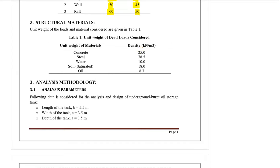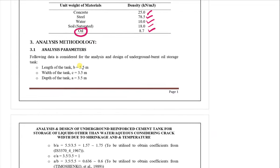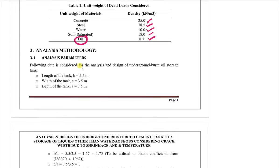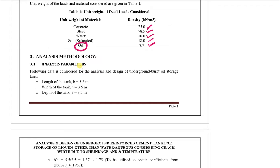These are the structural material densities: concrete is 25 kN/m³, steel is 78.5 kN/m³, water is 10 kN/m³, saturated soil is 18 kN/m³, and oil is 8.5 kN/m³. At some point this tank will be filled with oil, so we are also performing this design for an oil storage condition. We will also check the mature crack width which is always present.